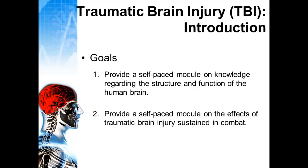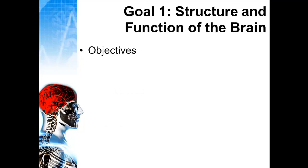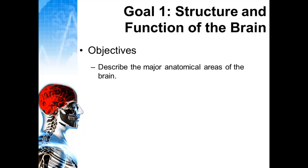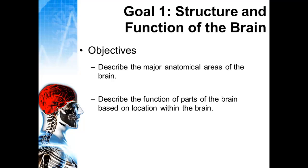Looking at each of those goals separately, there are specific objectives key to those goals. The objective is to describe the major anatomical areas of the brain and to describe the functional parts of the brain based on location. Each part of the brain has a specific function, and when one part of the brain is injured, it will present with very specific manifestations based on the function of that area.